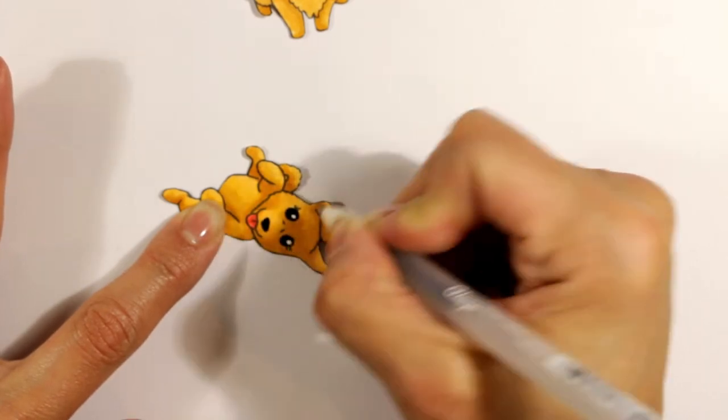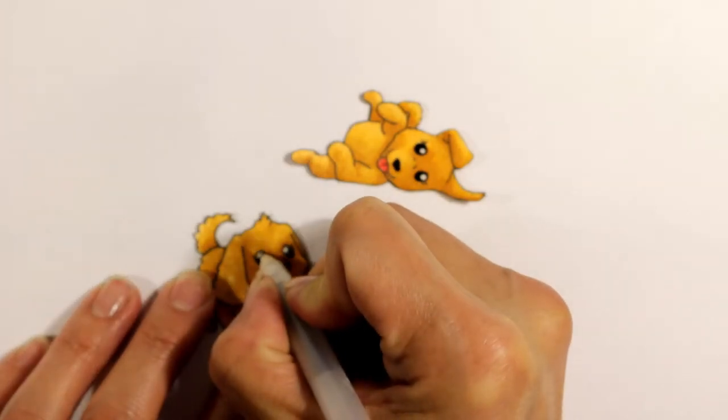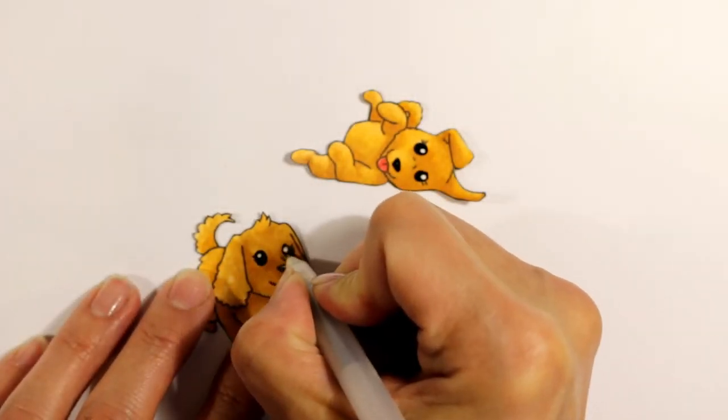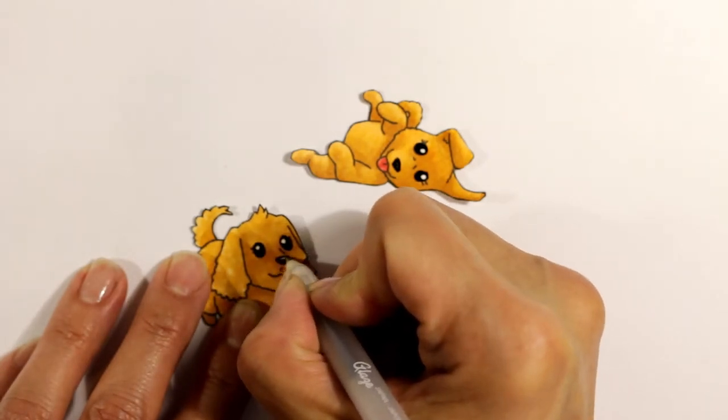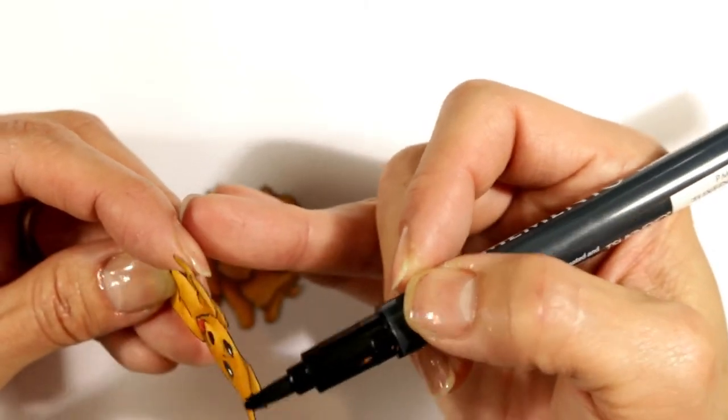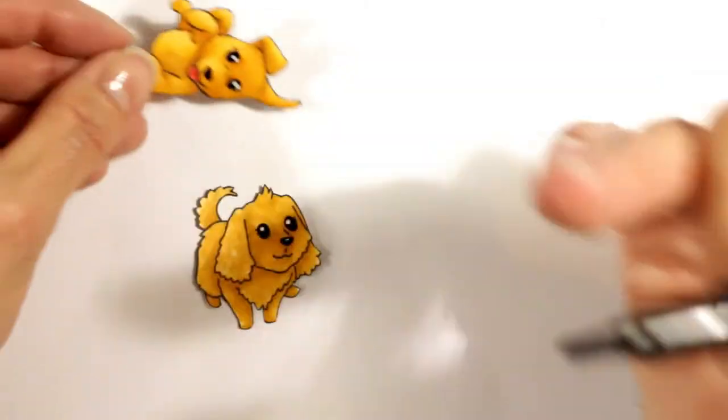I really love how glaze pens really make shiny areas and black areas really pop, makes it look alive. I'm using a Memento Tuxedo Black ink marker to ink the edges after fussy cutting the dogs.